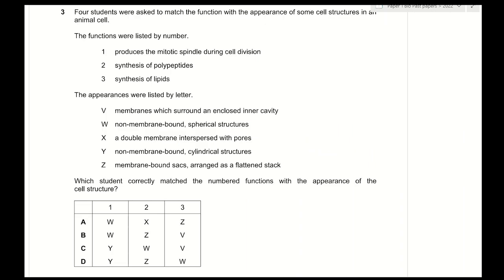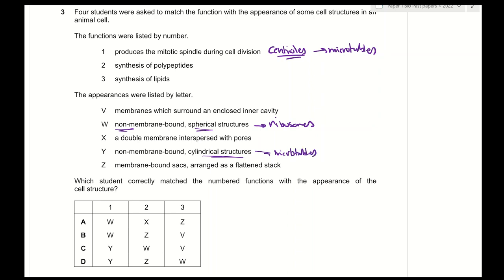Question 3: four students were asked to match cell structure functions with their appearances. Function 1 — produces the mitotic spindle during cell division — is produced by centrioles, which are made of microtubules. Looking at the options, W is non-membrane-bound spherical structures (ribosomes), while Y is non-membrane-bound cylindrical structures (microtubules). Therefore, function 1 matches Y.